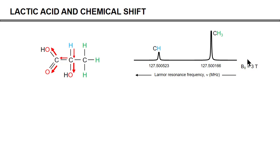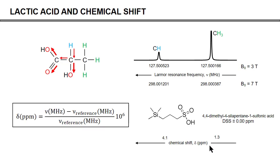At 3 Tesla versus 7 Tesla, the absolute frequencies differ — which is inconvenient if you need to compare with someone using a different magnet. So instead, frequencies are converted to a common chemical shift axis expressed in ppm using a reference compound, DSS, whose nine methyl group protons are defined as resonating at 0 ppm. With this definition and equation, the lactate methyl peak always resonates at 1.3 ppm and the CH proton always resonates at 4.1 ppm — whether measured at 7, 3, or 1 Tesla. This is a very convenient way of creating a uniform axis.